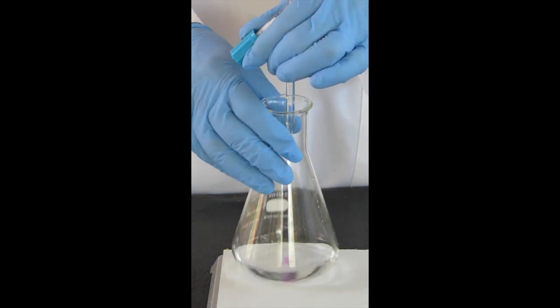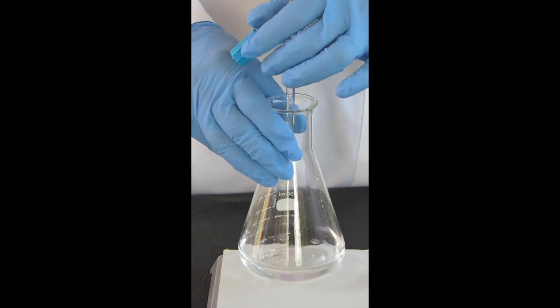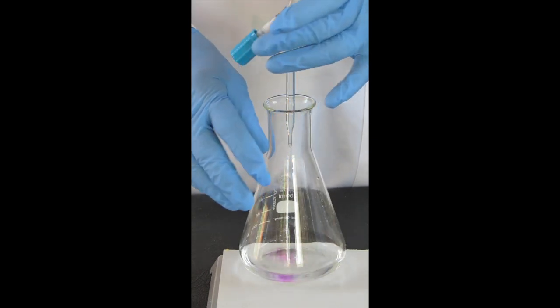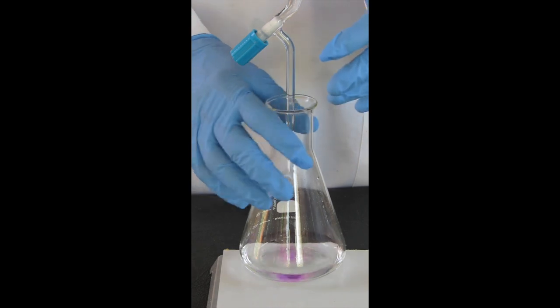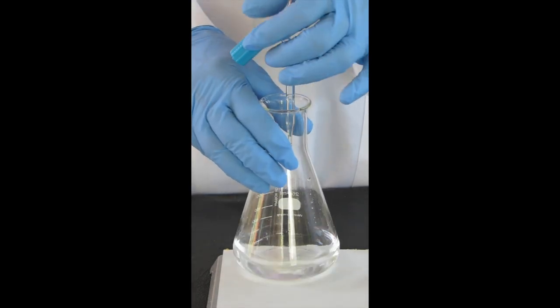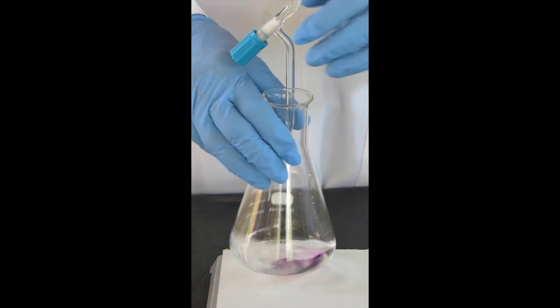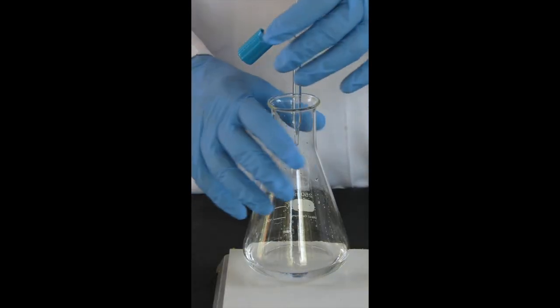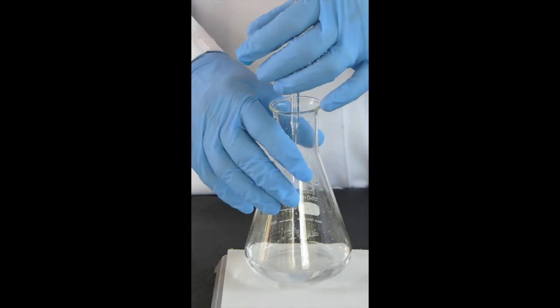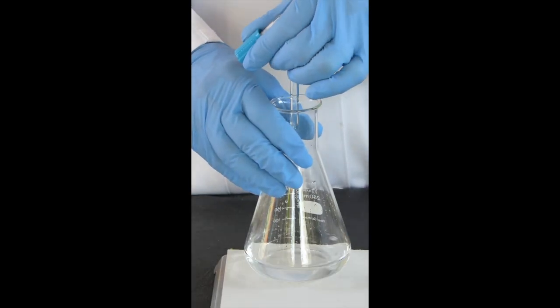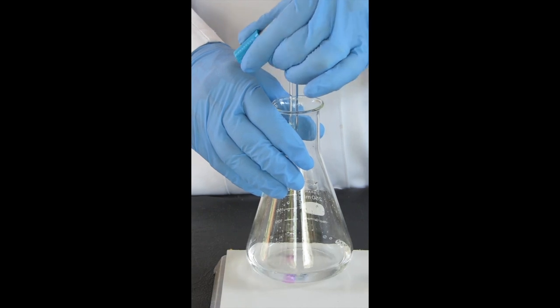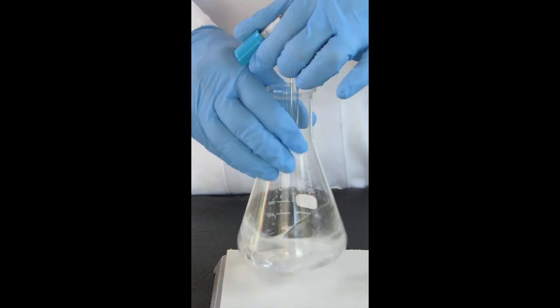At the moment I'm just going drop by drop, and I'll continue to do that. As you continue to run the base in, you'll see that the pink color starts to persist for longer. At this stage we can use a bit of deionized water to rinse off the tip of the burette.